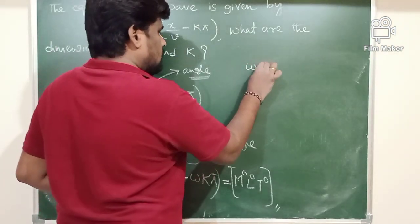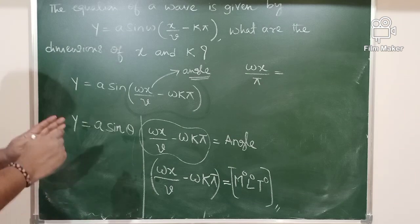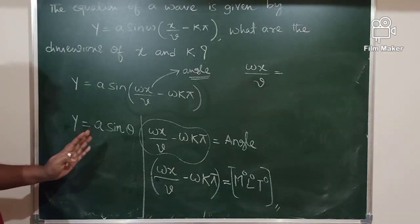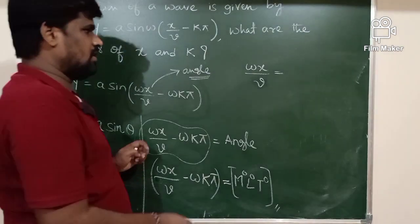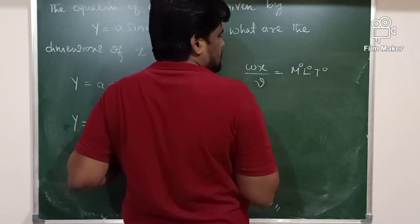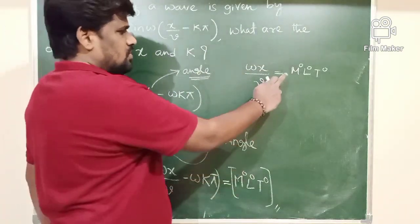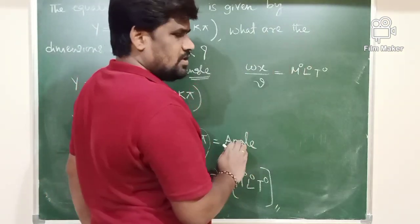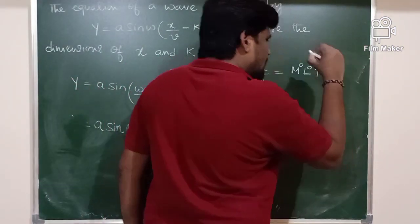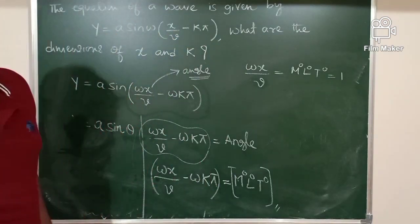So ωX/V is dimensionless, meaning it equals M⁰L⁰T⁰, which is 1. Therefore, X should equal V divided by ω, where V is velocity of the wave and ω is angular frequency.